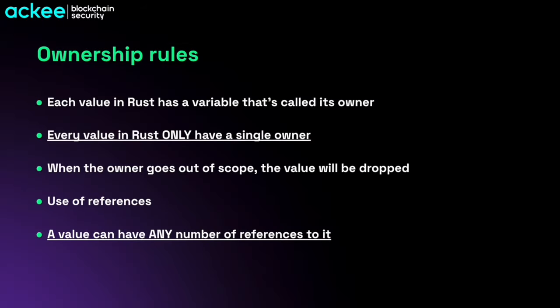Let's summarize what we learned about ownership rules and memory management in Rust. Each value in Rust has a variable called its owner. Every value in Rust has a single owner, and when the owner goes out of scope the value is dropped and deleted from memory. If we want to pass our values we can use references — these can be immutable or mutable — and a value can have any number of references to it. When passing a mutable reference, make sure the variable being referenced is also declared as mutable.